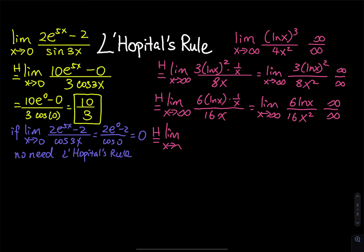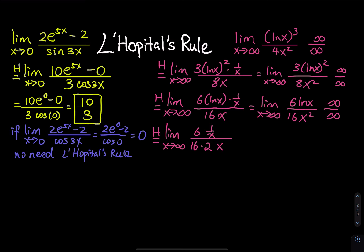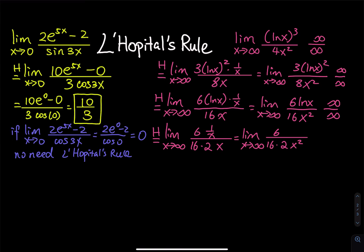For the third application, as x approaches infinity: bring the 2 down in the denominator to get 16 times 2 times x, and the top becomes 6 times 1 over x. Cleaning this up gives the limit as x approaches infinity of 6 divided by 32x squared. When you plug in infinity, you have 6 divided by infinity, which equals 0. That is the answer to the second limit.